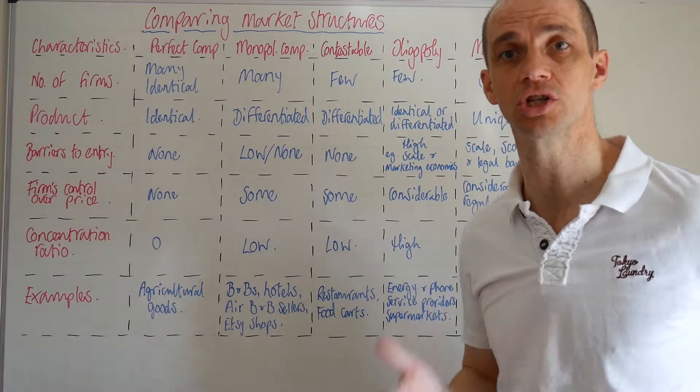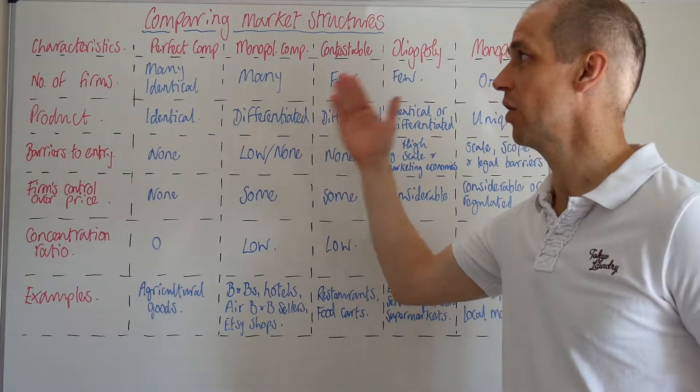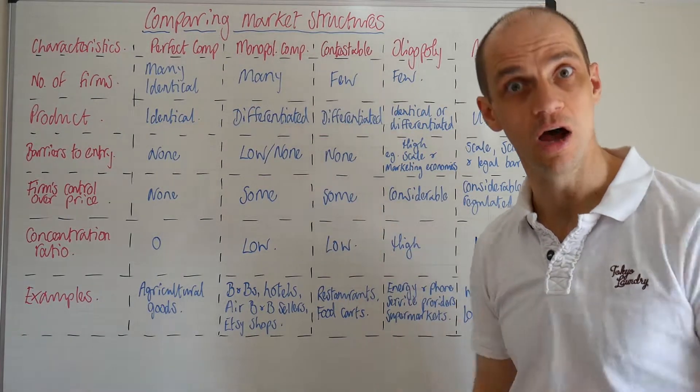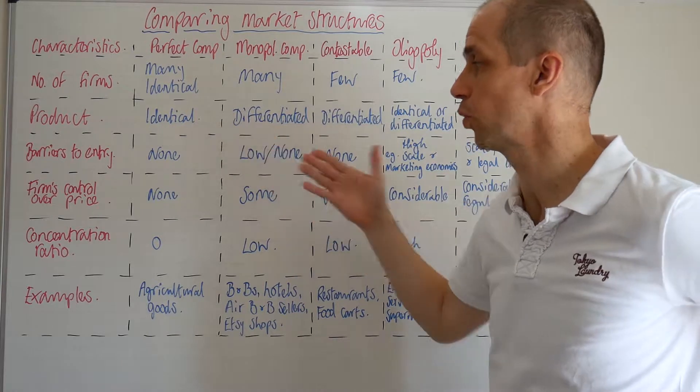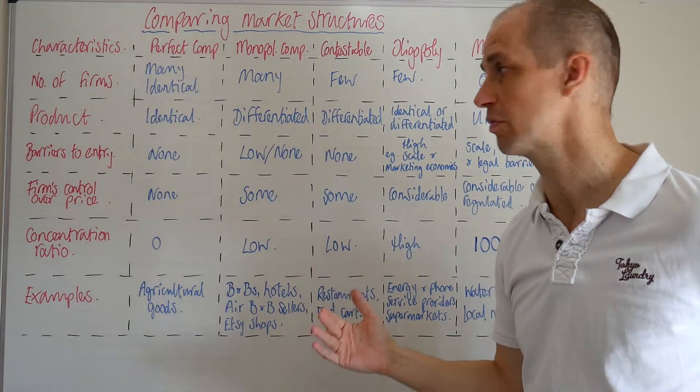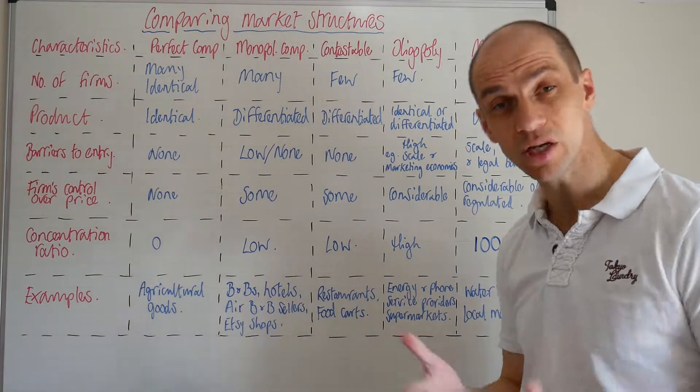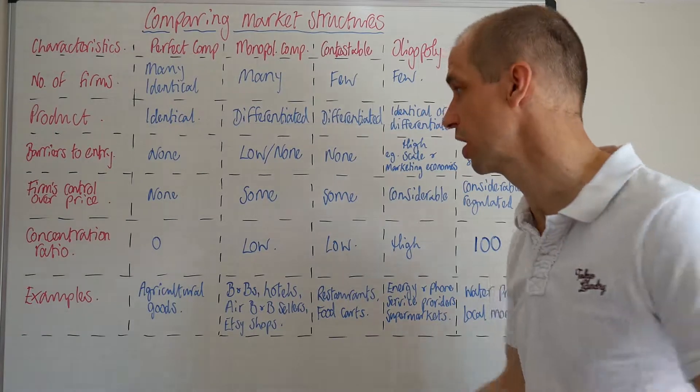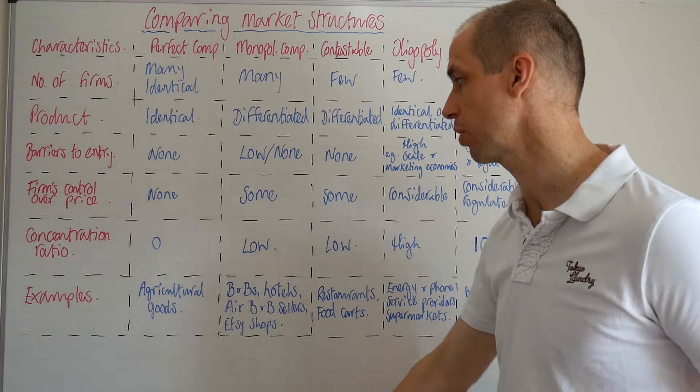Let's get started with perfect competition. We've got an industry with many identical firms within this marketplace. The products are identical. There's none or very low barriers to entry. There's no control over price—they are price takers. The concentration ratio is incredibly low, basically zero. No firm has any power over the marketplace.